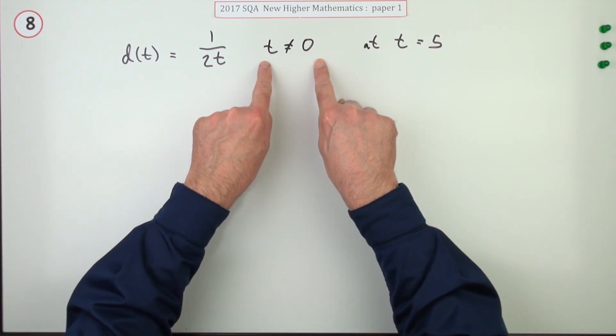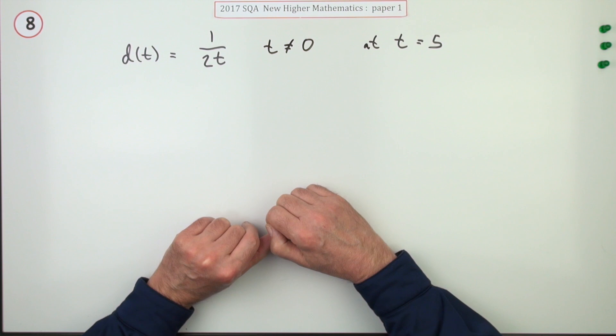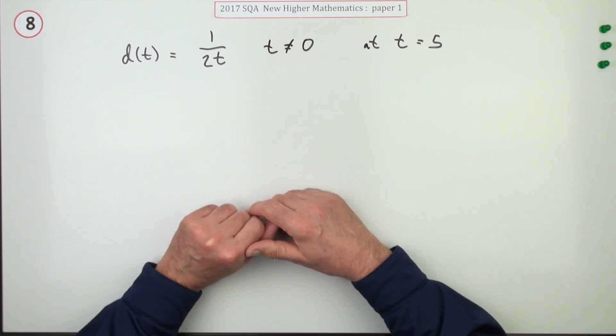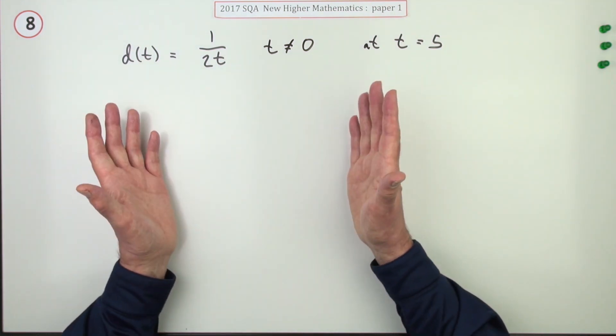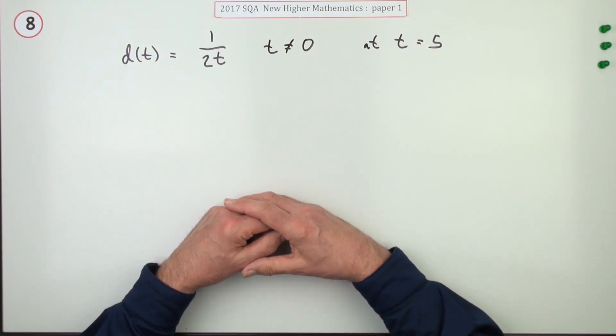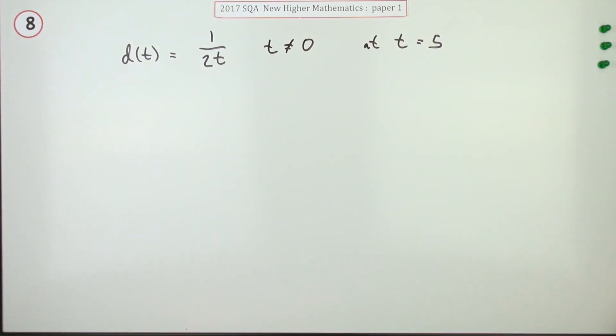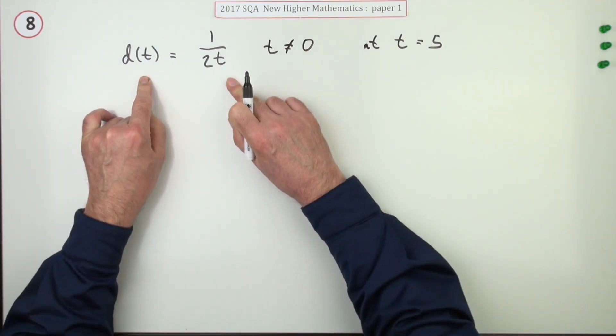Notice this little disclaimer here: t can't be zero because you can't do a division by zero. That's described as being undefined because you can't really write infinite down as an answer.